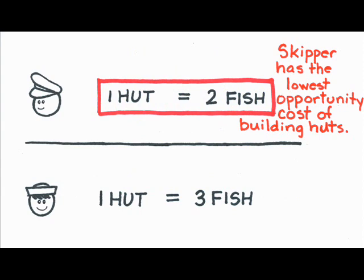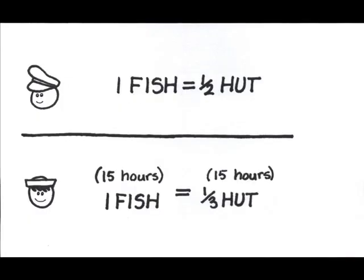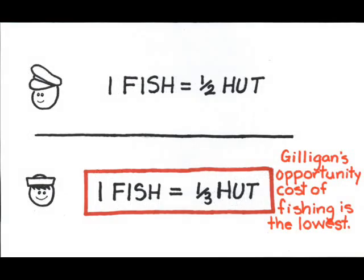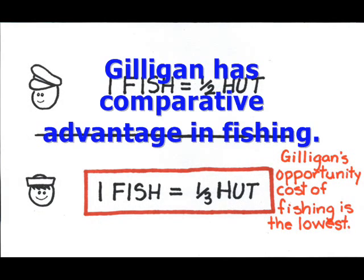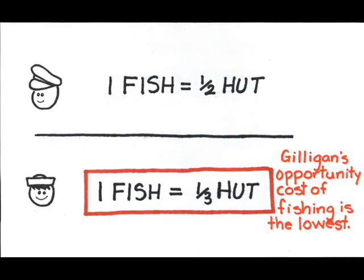Now, some of you might be thinking, well, of course Skipper has comparative advantage. He's better at everything. This is not necessarily true. Let's look at fish dinners. To produce a fish dinner takes the Skipper 10 hours, or he sacrifices one-half of a hut. Gilligan takes 15 hours, but he sacrifices only one-third of a hut. Gilligan actually has the comparative advantage in fishing because he sacrifices less or has the lowest opportunity cost.